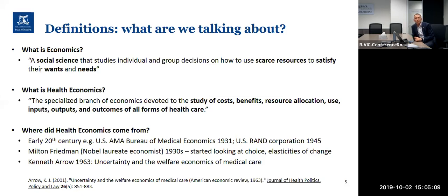Where did health economics come from? The best research I can find suggests it started in the 1930s in the United States when the American Medical Association started a medical economics bureau. After World War II, the US government started the RAND Corporation — Research and Development Corporation — which remains a powerful force in health economics. Early researchers include Nobel Laureate Milton Friedman, who was looking at choice and elasticity of change. Really the seminal paper for health economics is Kenneth Arrow's 1963 paper, with a 2001 policy paper also accessible through Google Scholar.